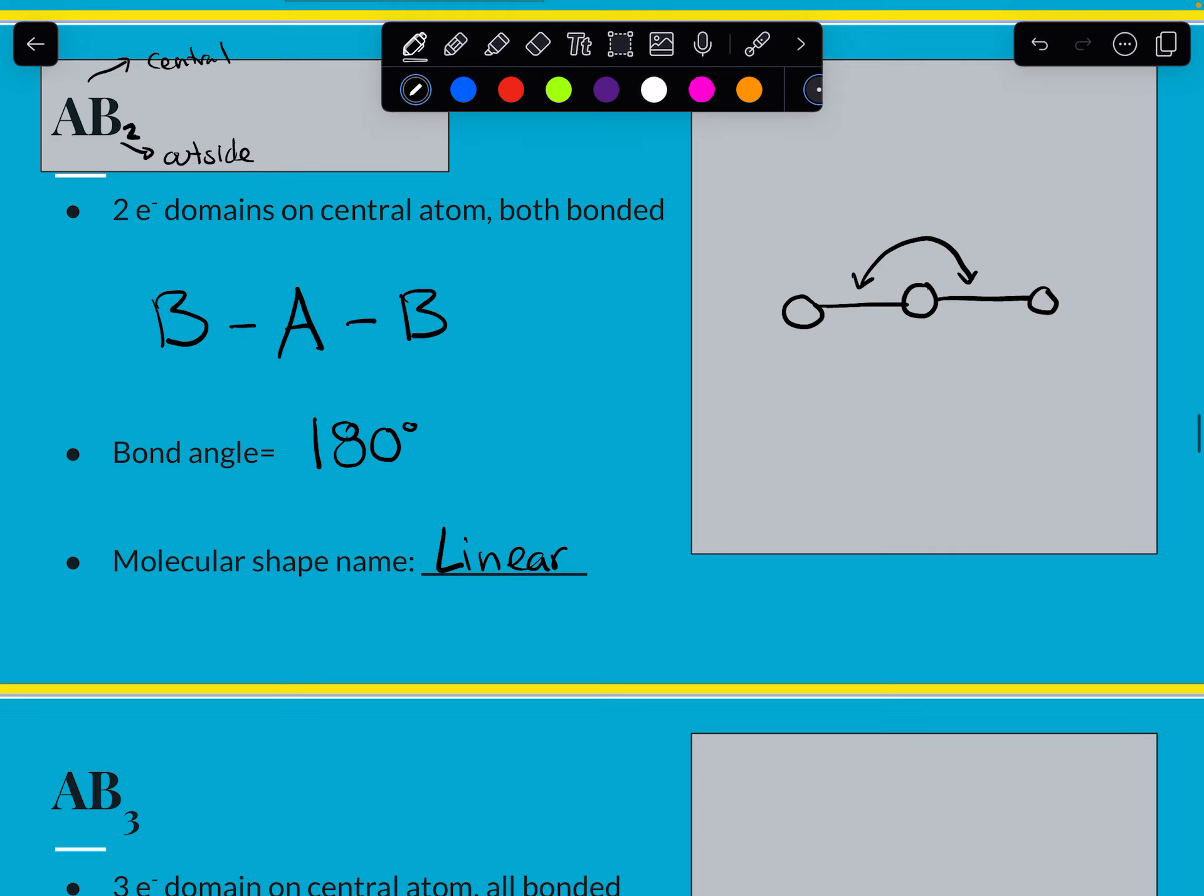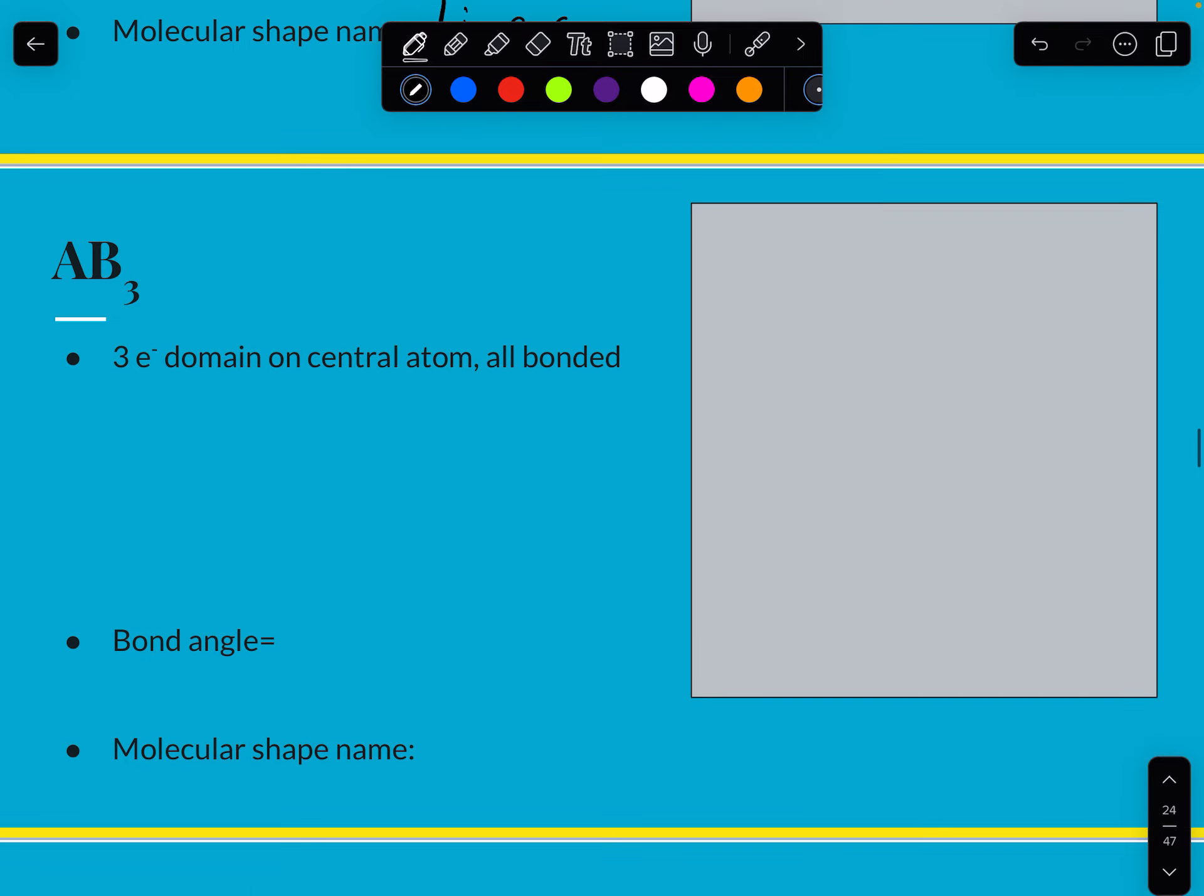All right. Let's look at the next one here. So we have an AB₃. So that means we have one in the center and then we have three things bonded to it. Just to show you with domains, this could easily be a double bond and it would still count as just three domains. Because one, two, three.